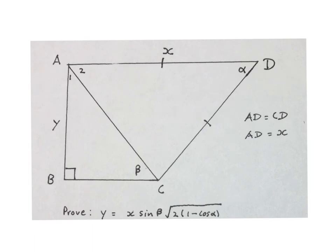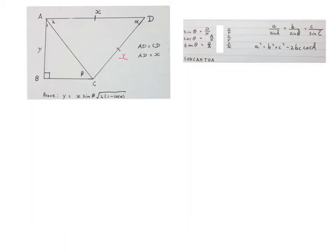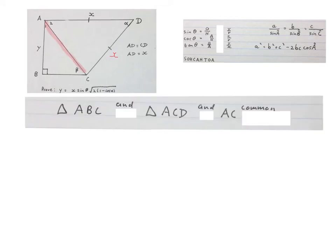The next question looks like this. They gave us this sketch and they said prove that y equals to this. They said that AD is equal to CD indicated on the sketch and they told us that AD is X. So we also bring in an X over here. Again we remind ourselves we can use SOCATUA, the sine rule and the cos rule. We have two triangles here: Triangle ABC and triangle ADC. Both of the triangles use AC as a common side. There's different ways you could have done this.